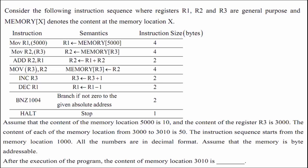But if you think carefully, you can come to a conclusion straight away — what is the content of memory location 3010 — without even dry running the program. We will see that first, and then dry run the program to verify. Let us look at the initial values of registers r1, r2, and r3.